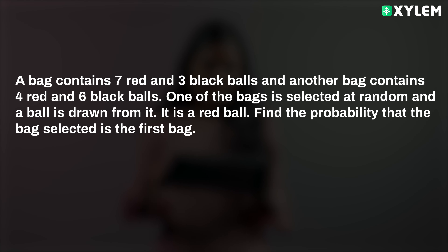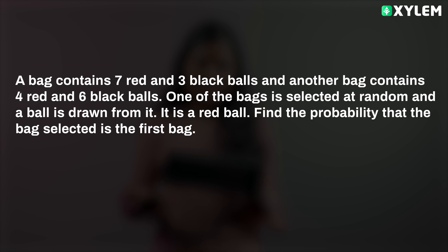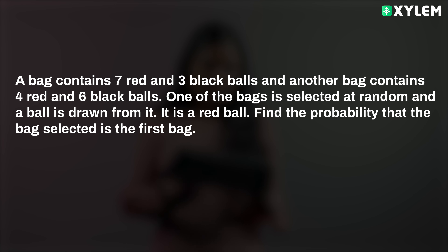A bag contains seven red and three black balls. Another bag contains four red and six black balls. One of the bags is selected at random, and a ball is drawn from it. It is a red ball. Find the probability that the bag selected is the first bag.